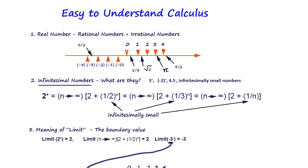Then another smart guy said: whatever number you give me plus two is the largest number. Well, who wins? Obviously plus two is larger than plus one, so the second smart guy wins. Because whatever the number is, plus something — you can tell how large that is. It's larger by two than whatever number you started with.